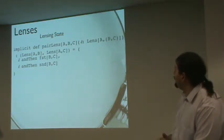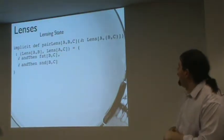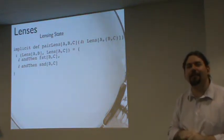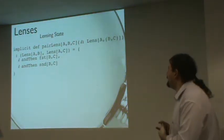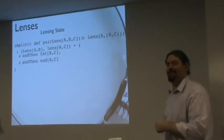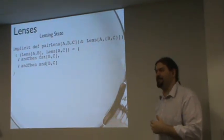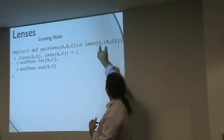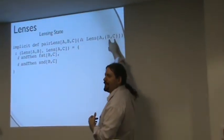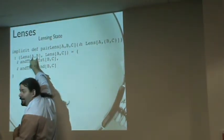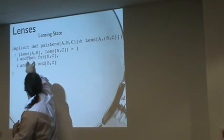And then finally, I think a fun conversion is that if I have a lens that knows how to view a pair, I can implicitly convert that, if I wanted to, I could implicitly convert it to a pair of lenses. So if I know how to get a B and a C out of an A, if I know how to get a pair of a B and C out of an A, I also know how to get a B out of an A.